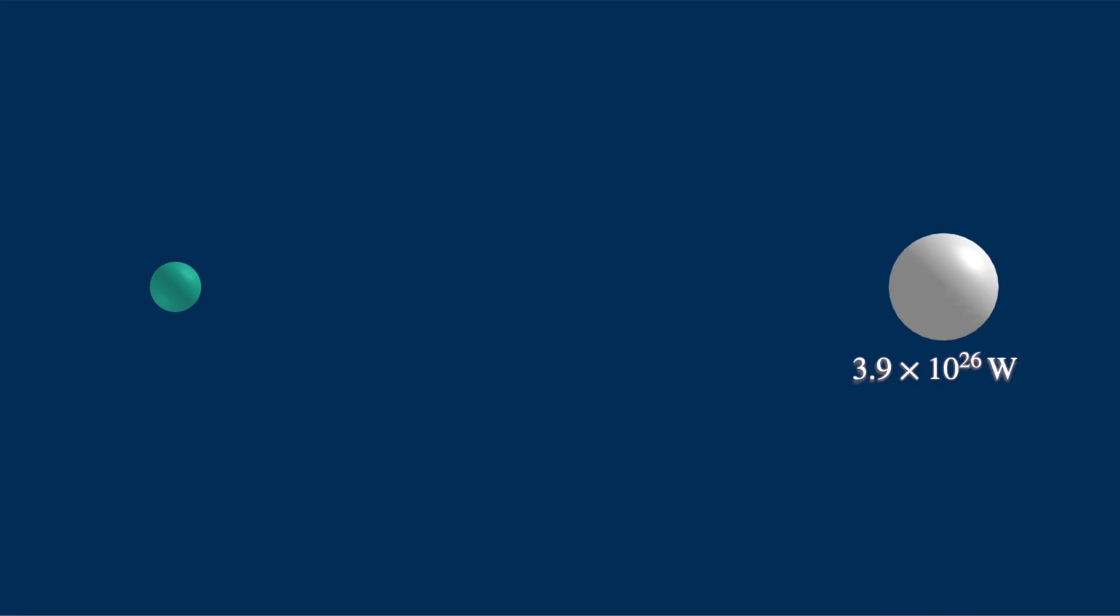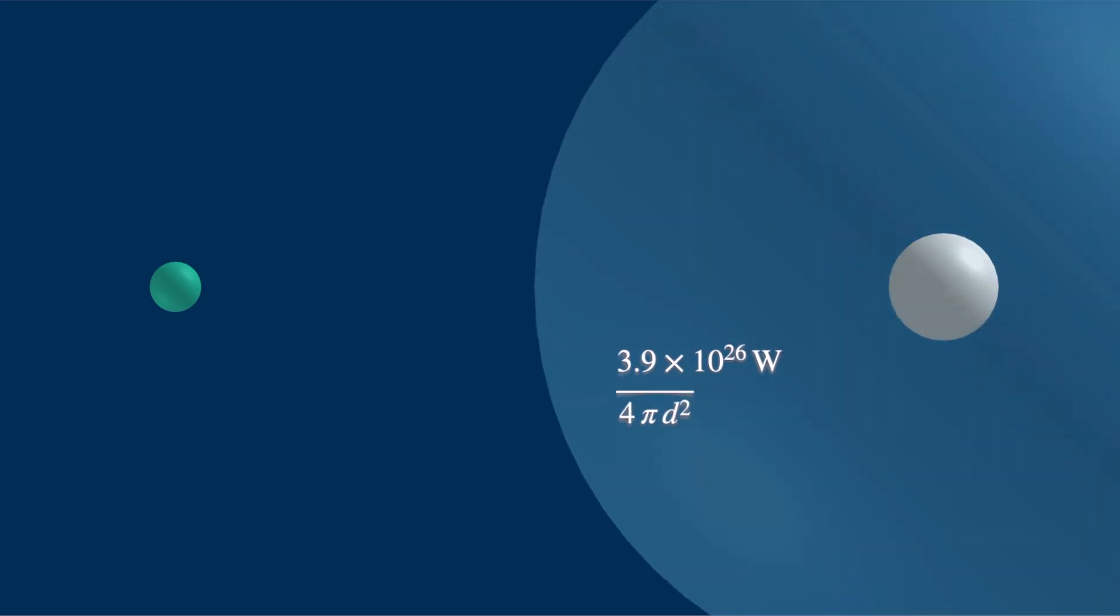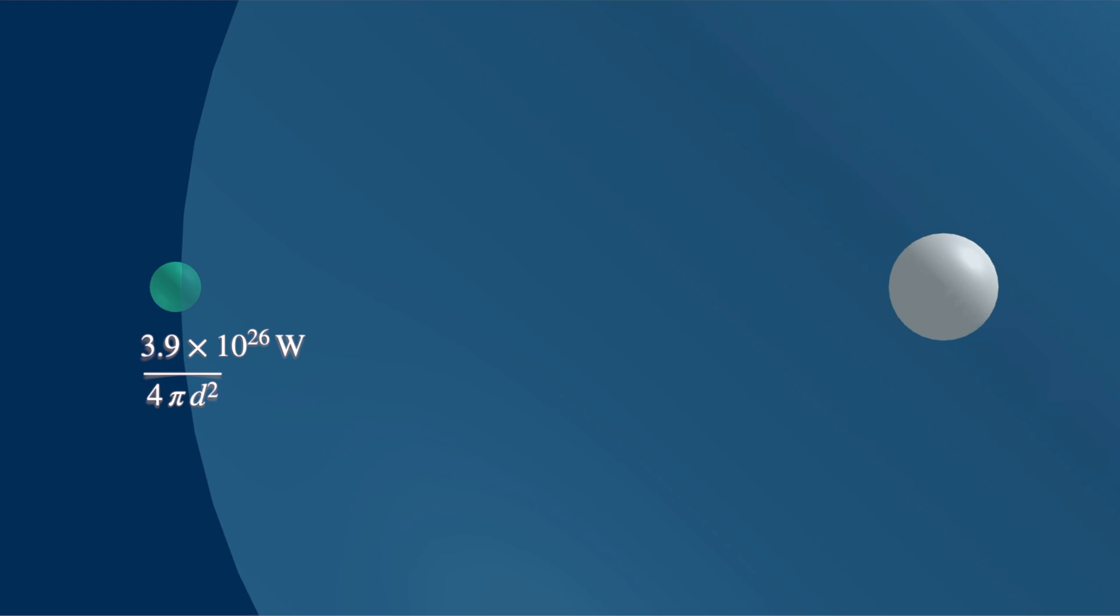It emits enormous amounts of radiation per unit time. But this energy dilutes with distance as it spreads. So by the time it reaches the Earth, it is a mere 1366 watts per meter squared.